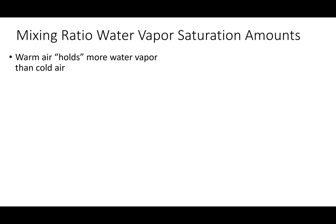Warm air holds more water vapor than cold air. In my house, we humidify in winter and dehumidify in summer. Cold outside air is very dry — the colder it is, the drier it is. That dry air finds its way inside, drying out our instruments and us. Now let's talk about relative humidity, or RH. AC is actual water content, and MC is maximum water content — you look the maximum up on a table.